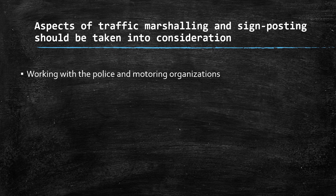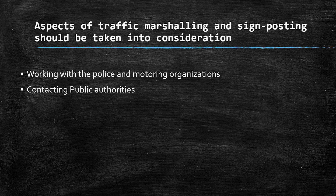These are the aspects regarding traffic marshalling and signposting that should be taken into consideration. The first is working with the police and motoring organizations about the signs of routes to the event site, the movement of traffic, and access of emergency services. The next is contacting public authorities and coach organizations regarding additional arrangements for shuttle services, remote car parking, and train capacities.